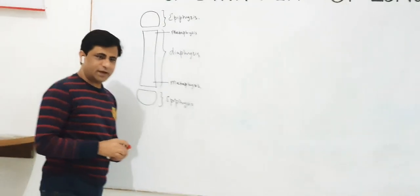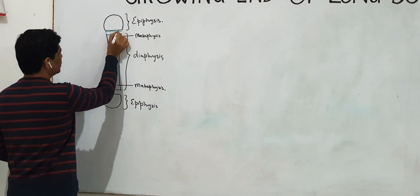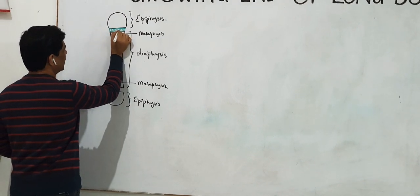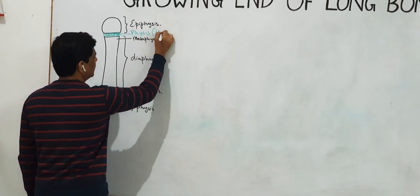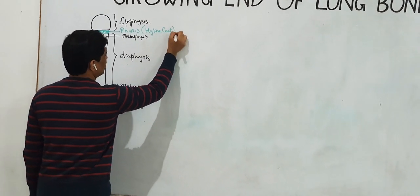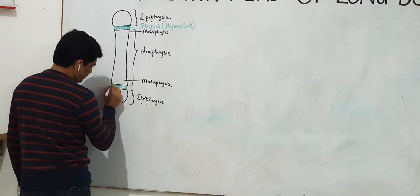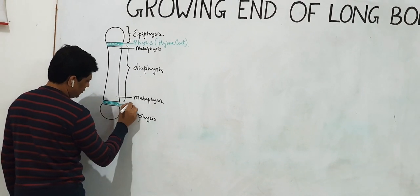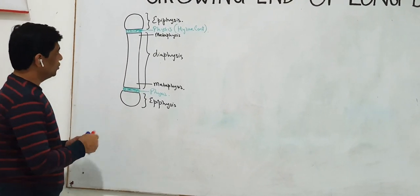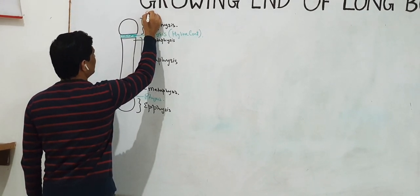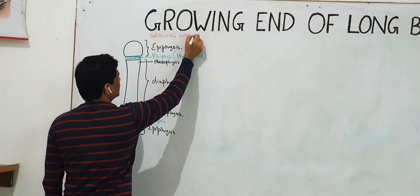Interposed between the metaphysis and the epiphysis is a plate of hyaline cartilage called the physis. This physis is made up of hyaline cartilage and is present at both ends of the growing bone. This is the growing long bone — the physis provides for the longitudinal growth of the bone.